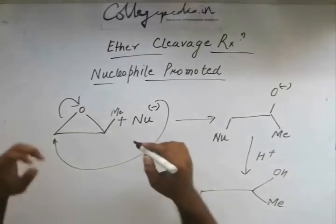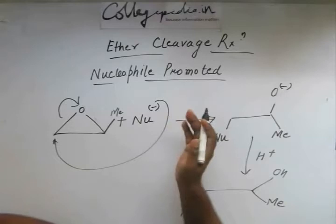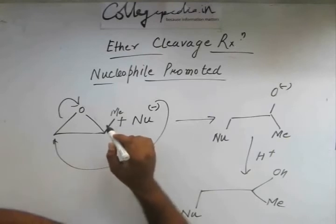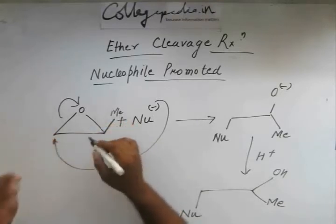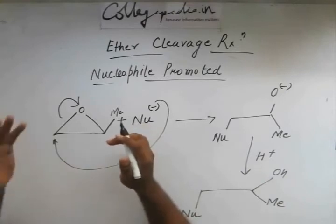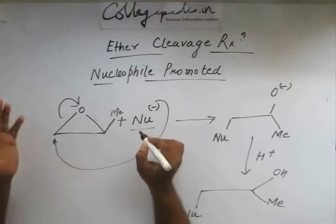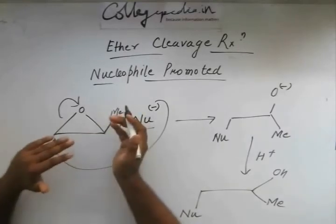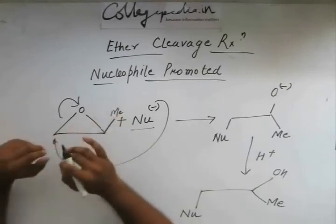This is opposite to what we learned in the acid-promoted ether cleavage reactions. In acid-promoted reactions, an electrophile formed first and the carbocation that formed was the most stable one — so the reaction was governed by carbocation stability rather than steric hindrance. In the nucleophile-promoted case, the reaction is governed by the steric hindrance of the epoxide or cyclic ether, consistent with an SN2 mechanism.